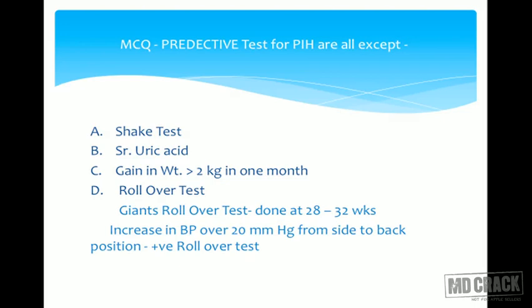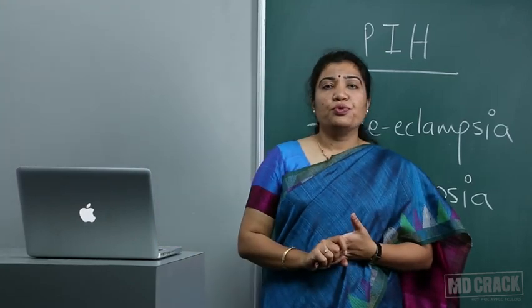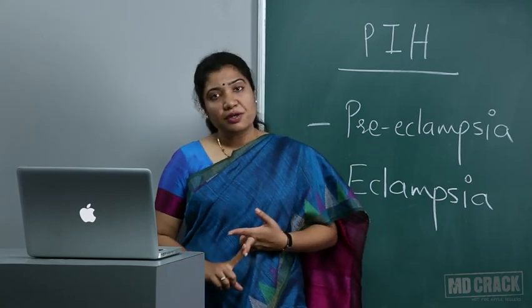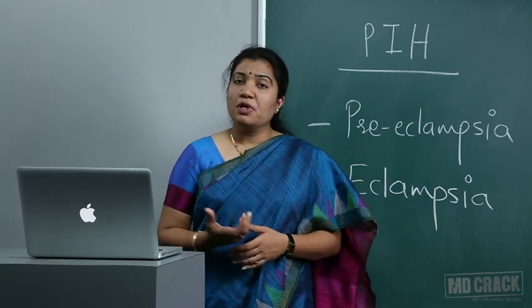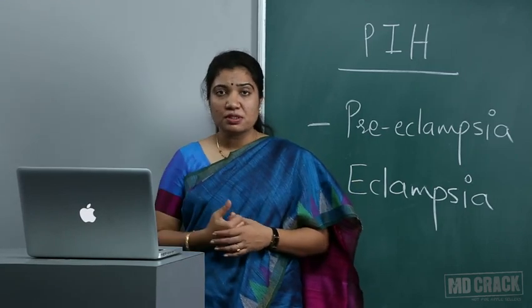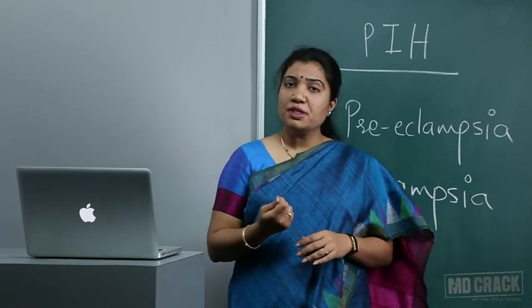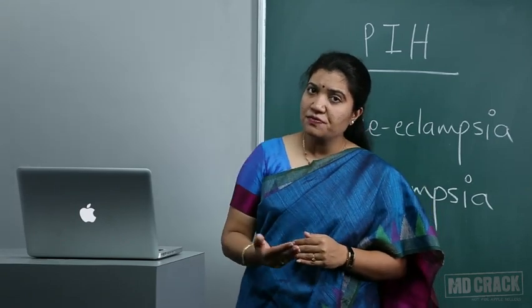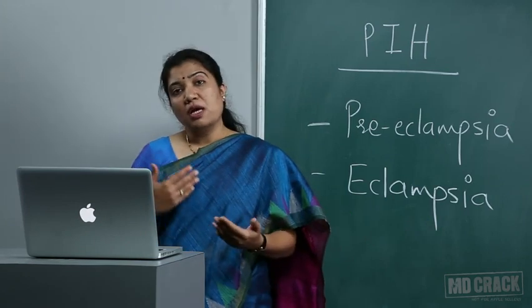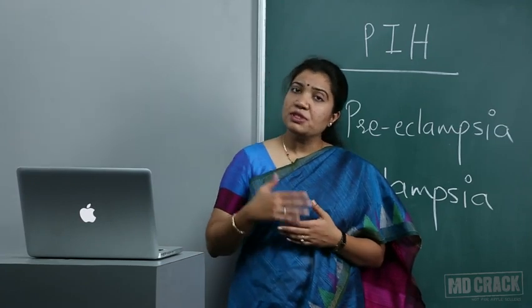Other predictive tests for PIH: serum uric acid, mean arterial pressure, urinary calcium — hypocalciuria is a risk factor — angiotensin sensitivity test where exogenous angiotensin causes a sudden BP rise indicating intact vasoconstrictor reflex, and Gant's rollover test. Doppler ultrasound is now a major screening tool: uterine artery Doppler at around 24 weeks showing a diastolic notch or high resistance index suggests the patient is likely to develop PIH.